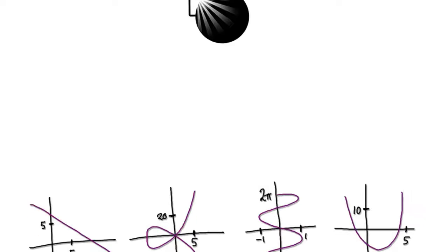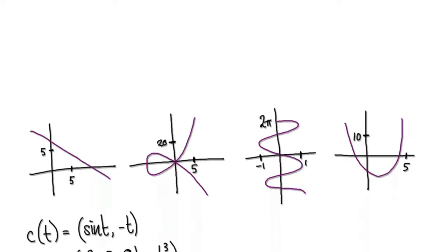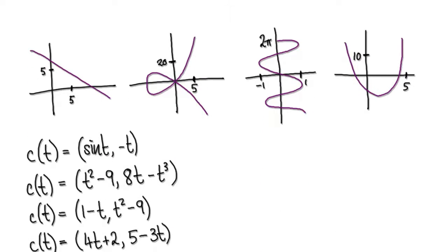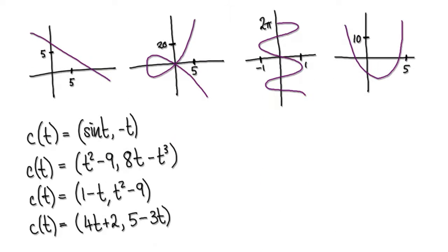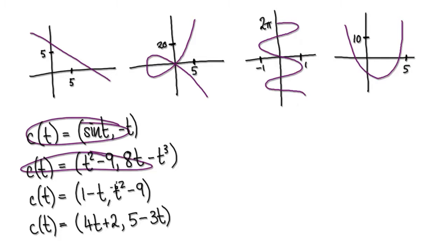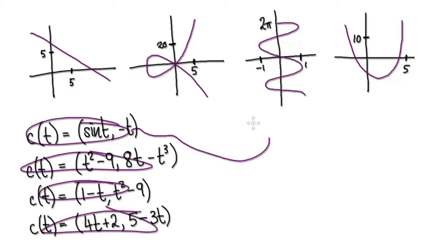In this video, we're going to try and develop a gut instinct on what a graph should look like from its parametric form. So you've got 1, 2, 3, 4 here. Try to match each one of these with the appropriate graph.